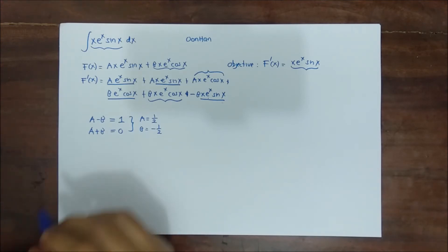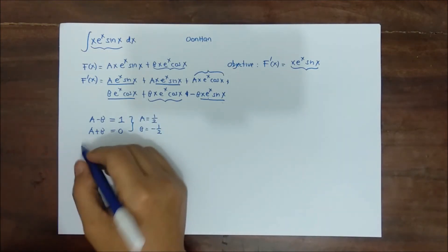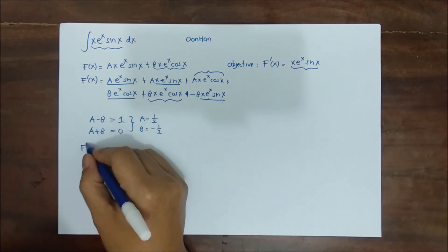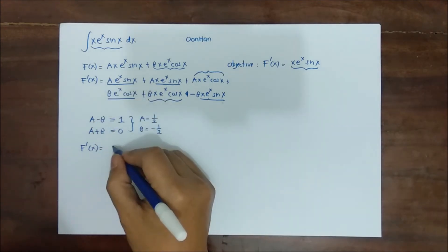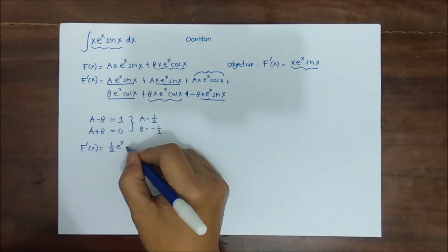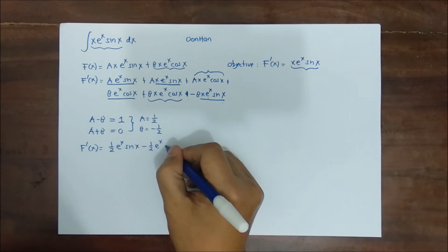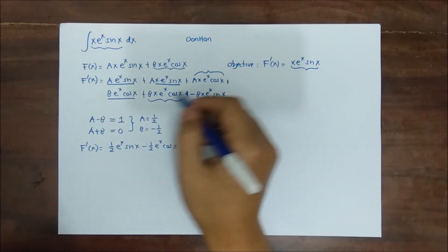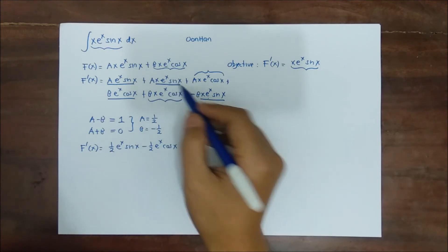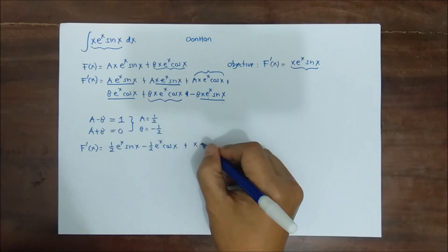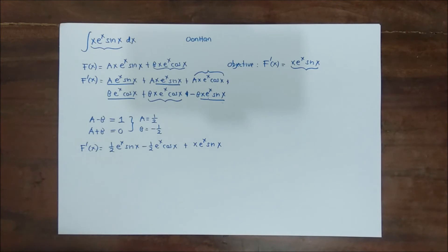With a = 1/2 and b = −1/2, F'(x) becomes: the a·x·e^x·sin(x) and −b·x·e^x·sin(x) terms combine to give x·e^x·sin(x), and the unwanted x·e^x·cos(x) terms cancel. However, we still have leftover (1/2)·e^x·sin(x) and −(1/2)·e^x·cos(x) terms, and we are almost there.